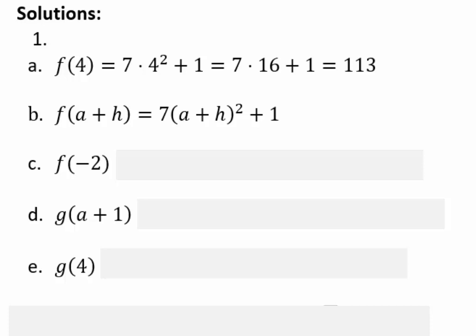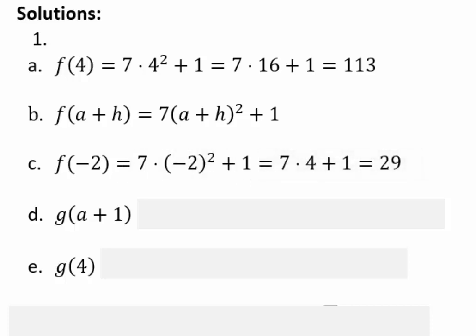Right now we're just concerned about evaluating functions — you don't have to simplify that any further. f of negative 2: similarly, you will replace negative 2 for x in the f function and compute it, getting 7 times 4 plus 1, or 29.